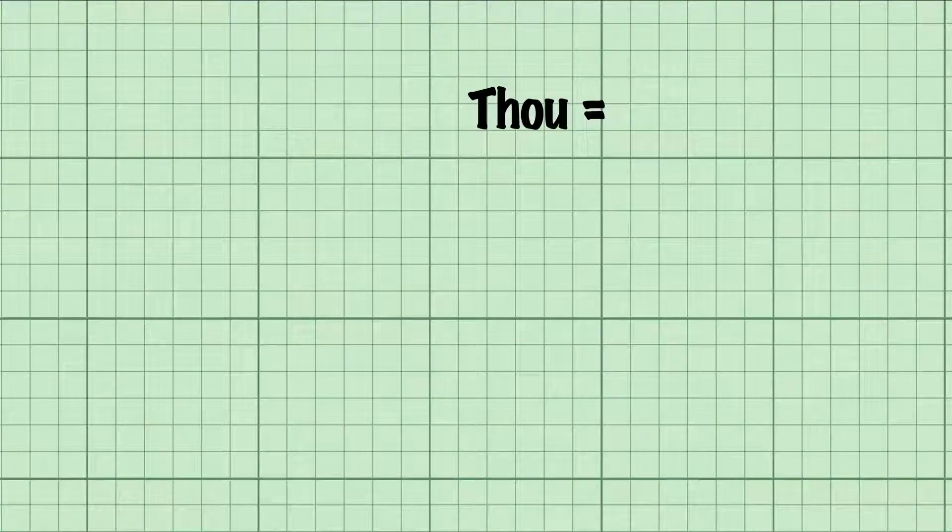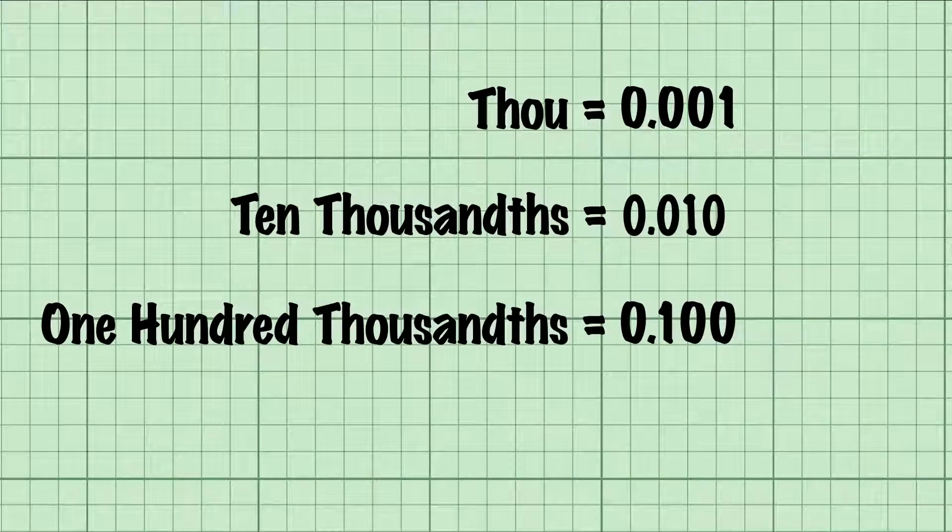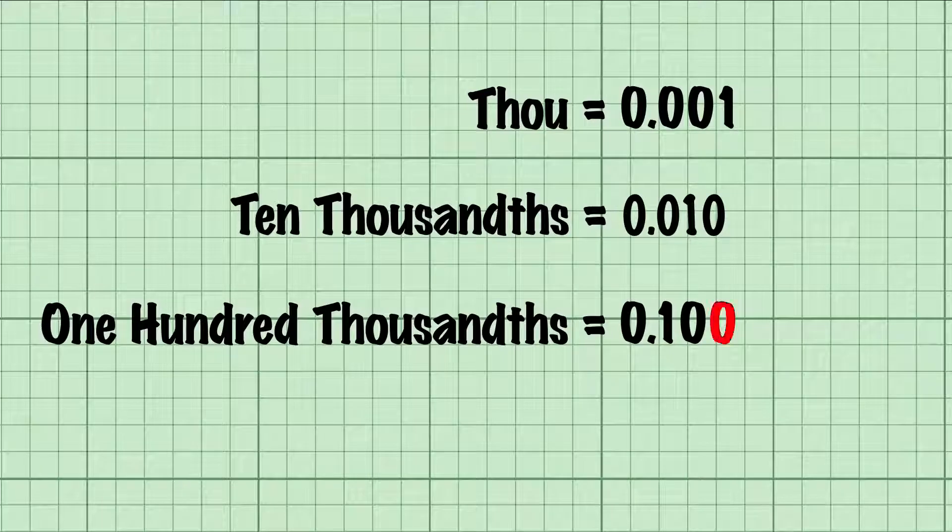The basic measurement is one thousandth of an inch, called a thousandth, or a thou. This is how it's expressed on paper. And this is ten thousandths. So what would you call this? That's a hundred thousandths because we're counting up or down from the third decimal place.